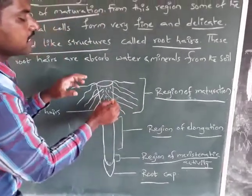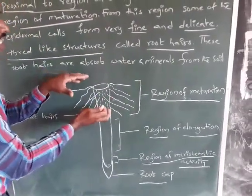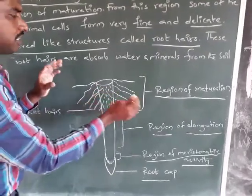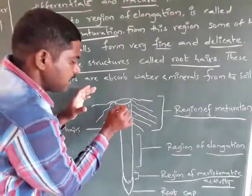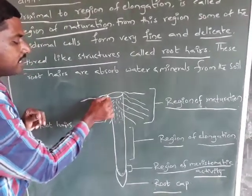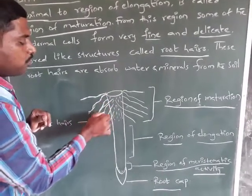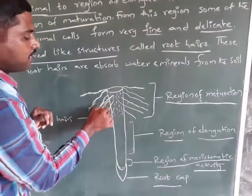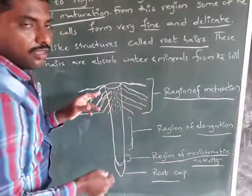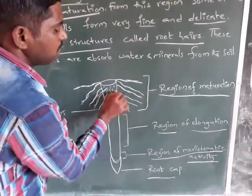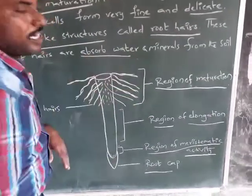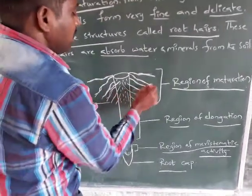In the maturation region, the epidermal cells produce small, slender, thread-like structures called root hairs. The function of these root hairs is to absorb water and minerals from the soil.